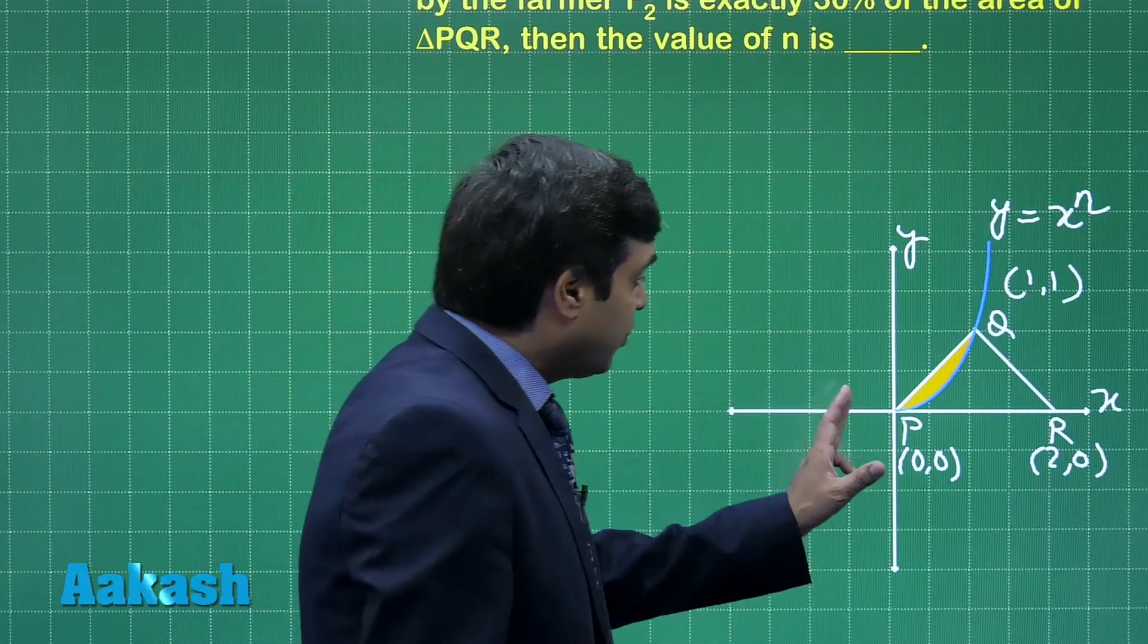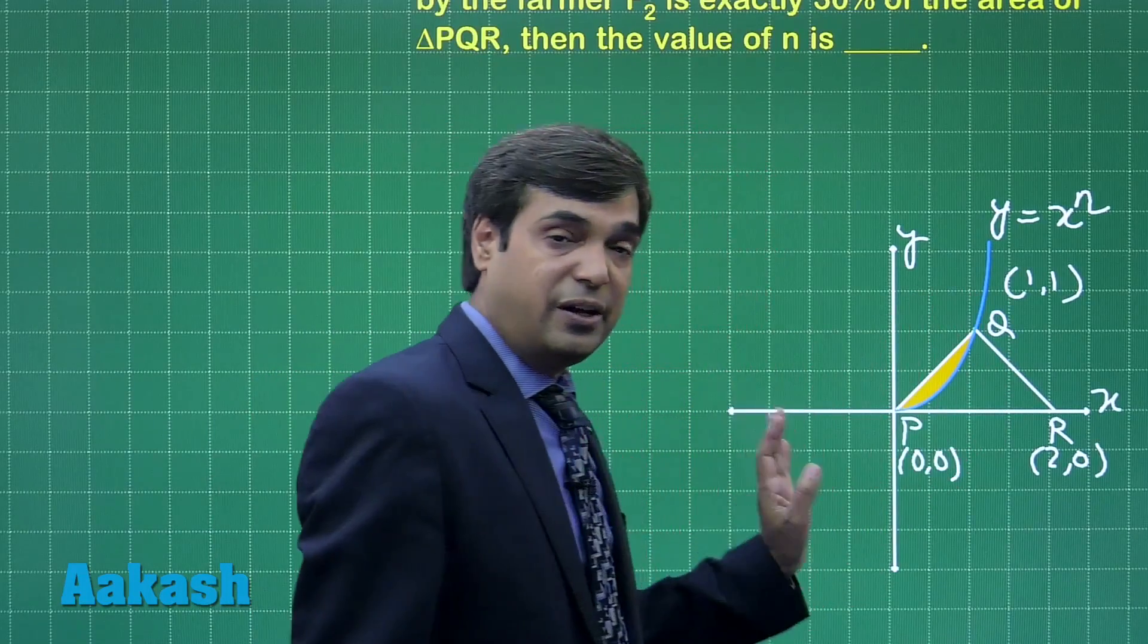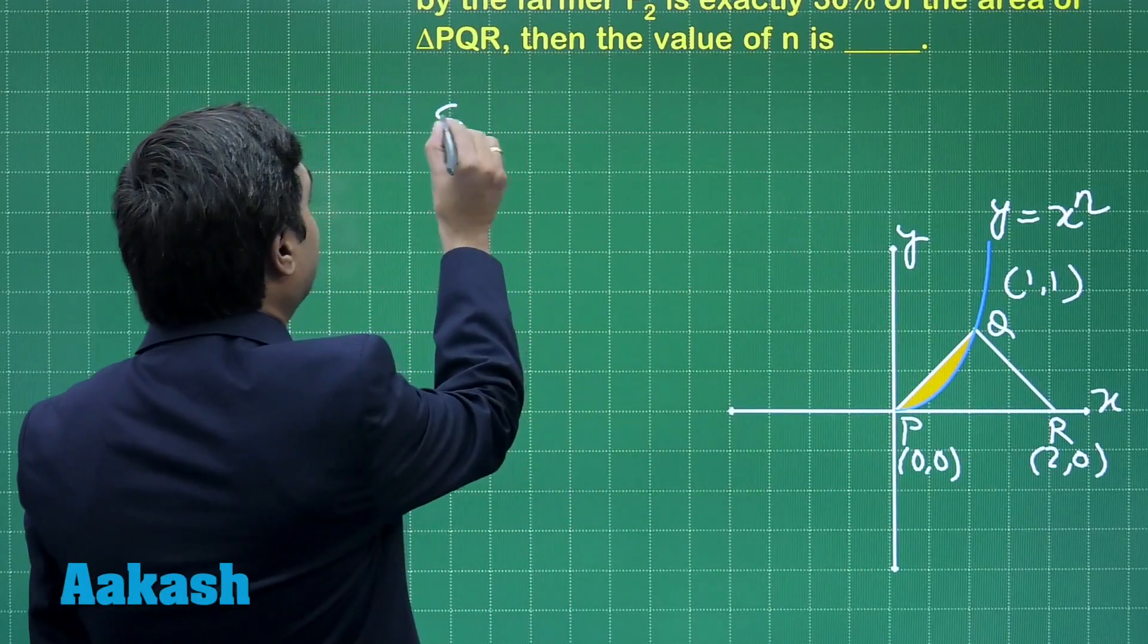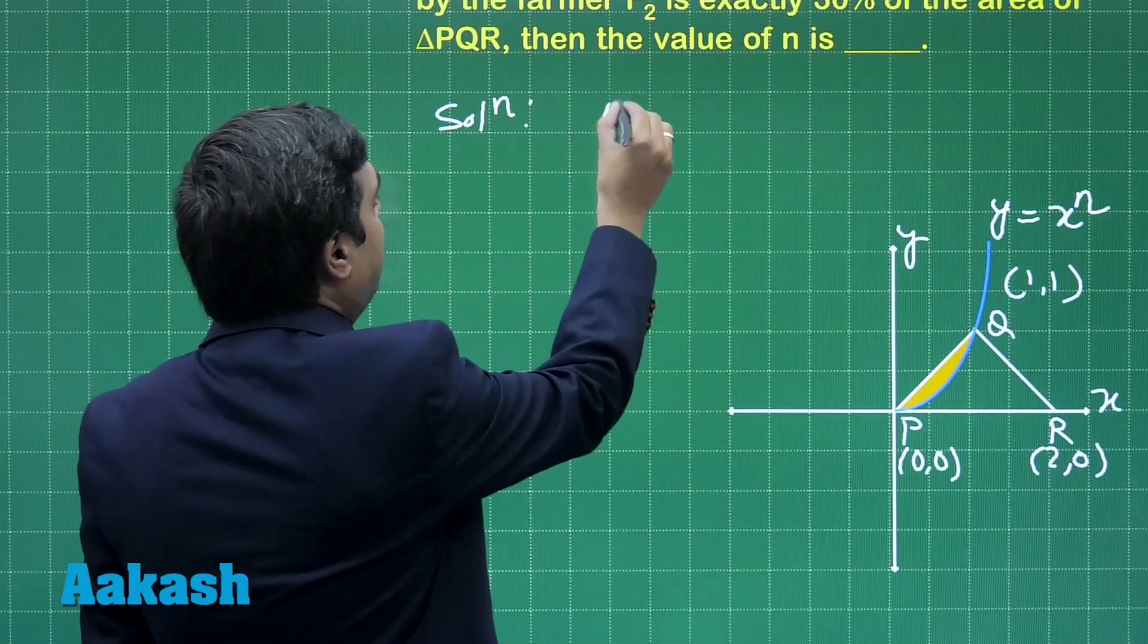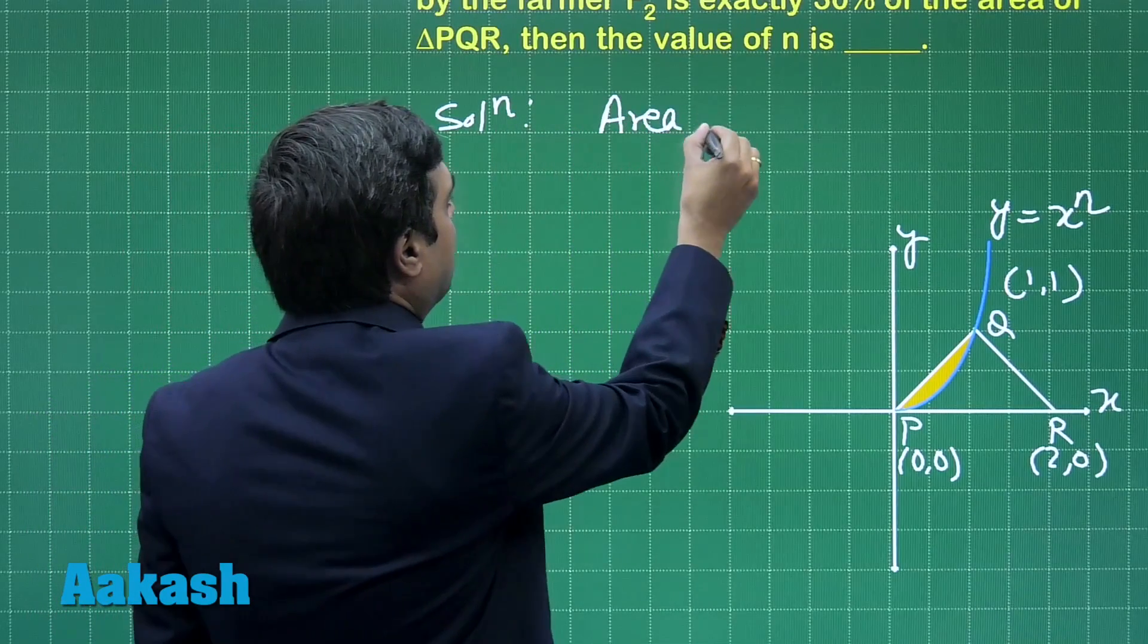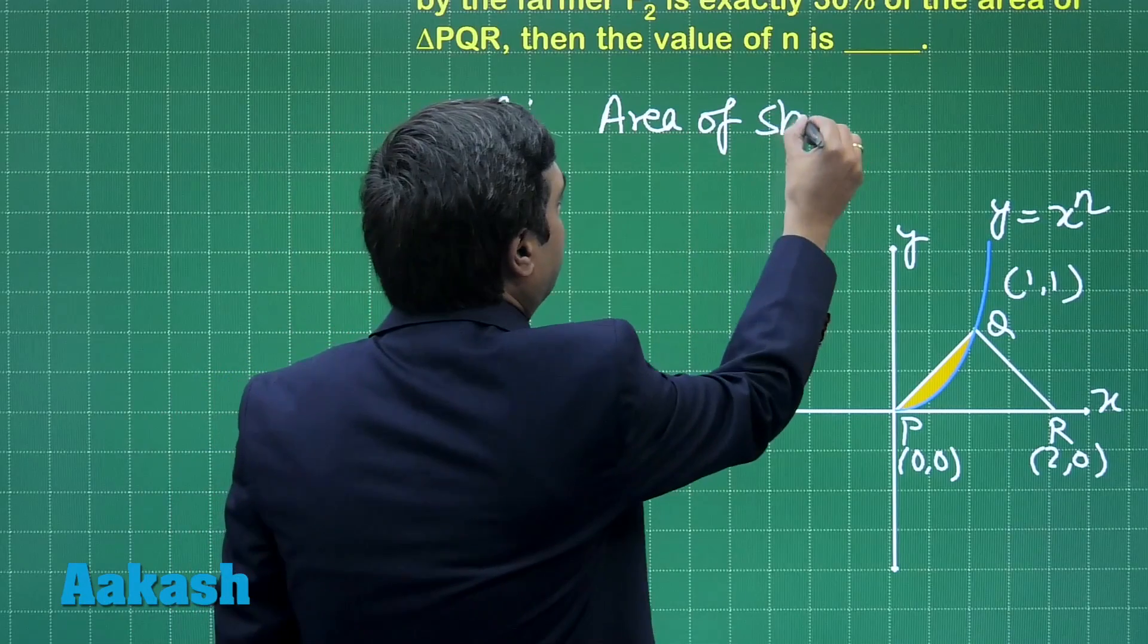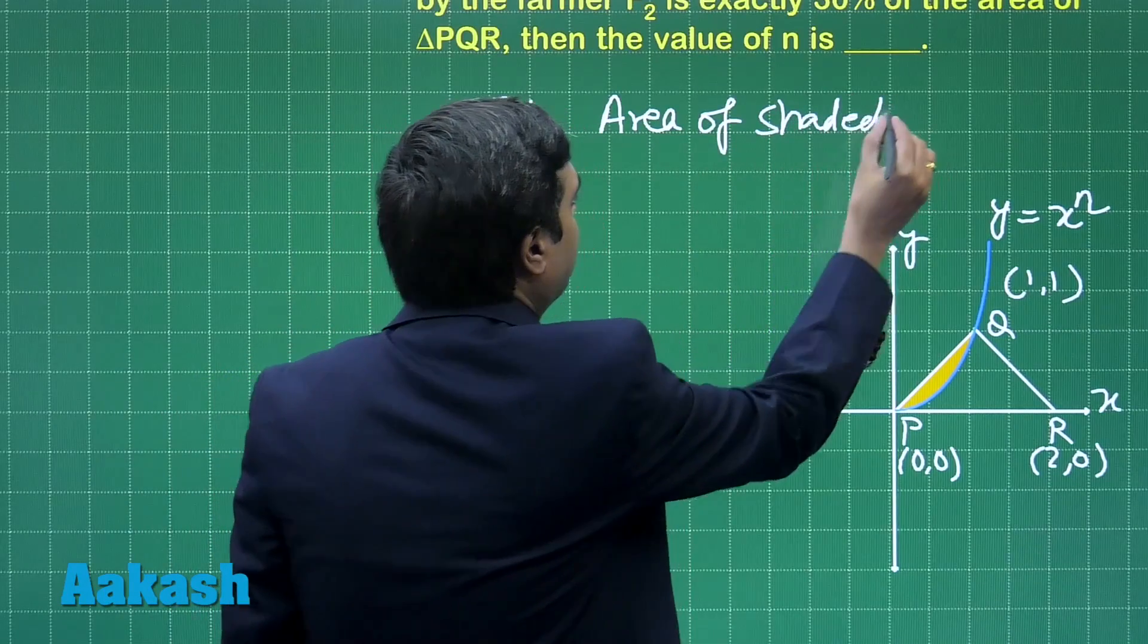Now we have to find area of this shaded region. So we can start it as area of shaded region